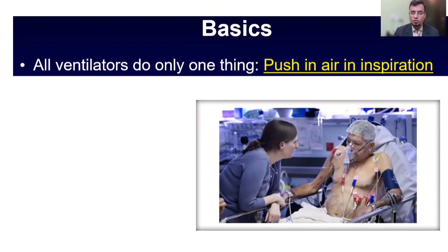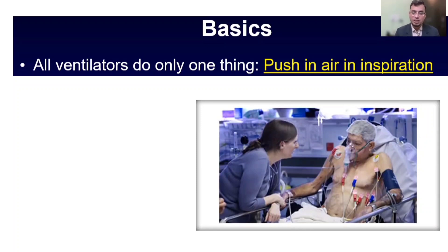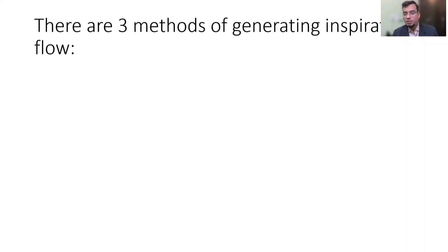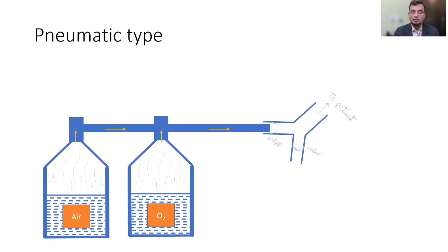Fundamentally, all ventilators do just one thing: push air into the patient's lung during inspiration. When gas moves in through the trachea to the lung it is called inspiratory flow, the demand for which is quite high in critically ill patients who do not have enough capacity to generate that flow themselves — therefore a ventilator is needed. There are three main methods of generating inspiratory flow: pneumatic, piston, and turbine.